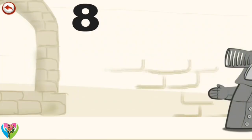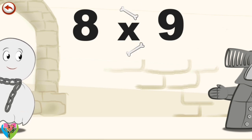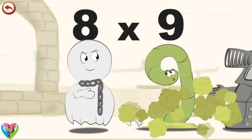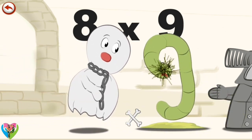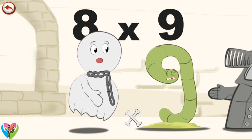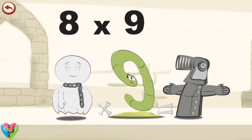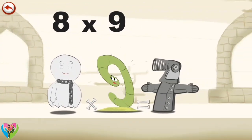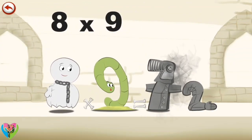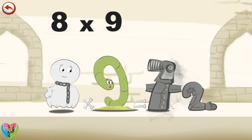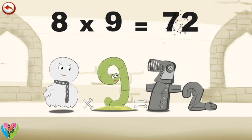What's the story of eight times nine? When Spooky Eight the ghost sees Slimy Nine, he rushes to give him a fright. Slimy Nine jumps and bumps into a set of armour in the shape of a seven, which loses an arm in the shape of a two. Eight times nine is seventy-two.